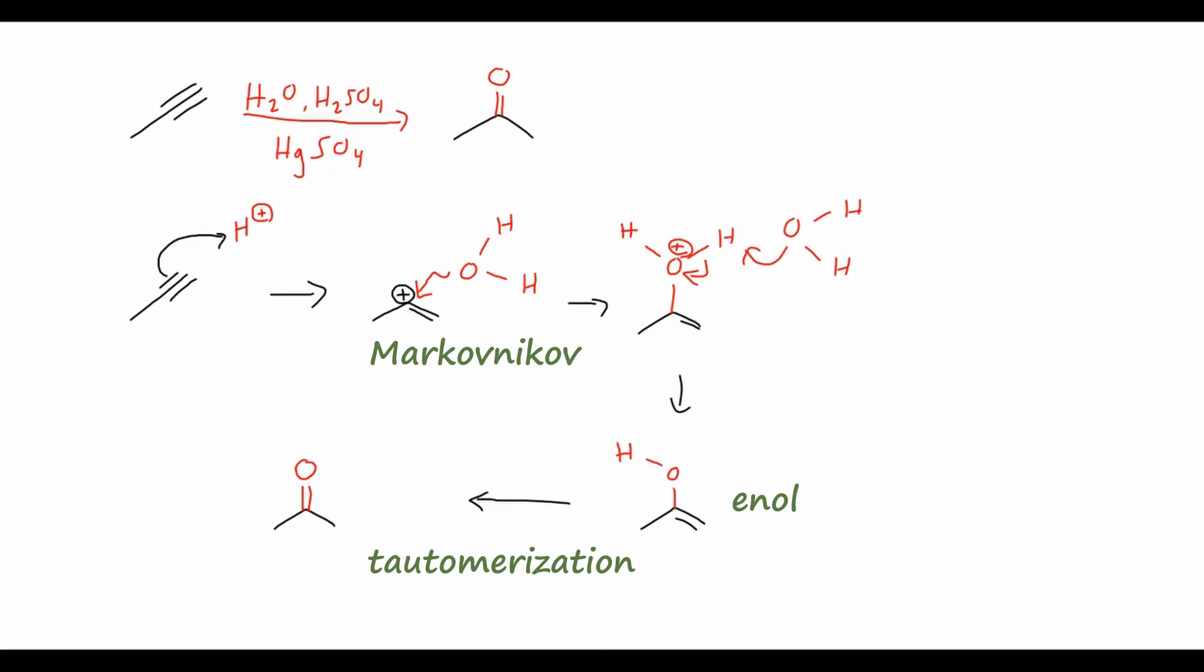We will study how this tautomerization occurs in later chapters, but for now just understand that any time you form an enol, a double bond next to an OH group, it is going to change and favorably be in the state of the ketone, where that double bond has just migrated instead of between the two carbons, now it's between the carbon and the oxygen.